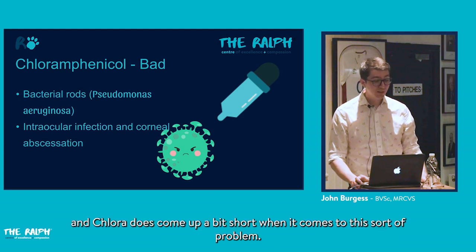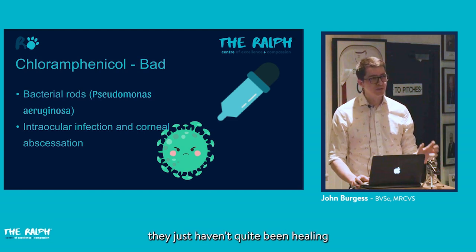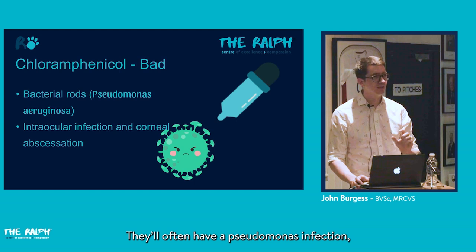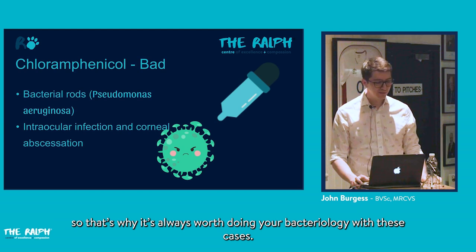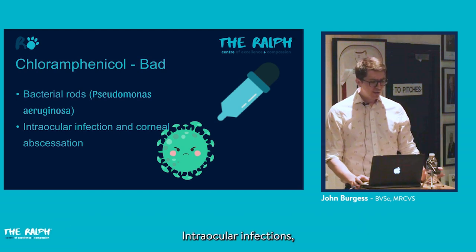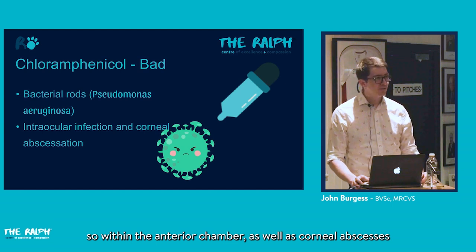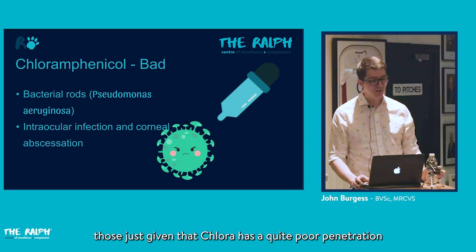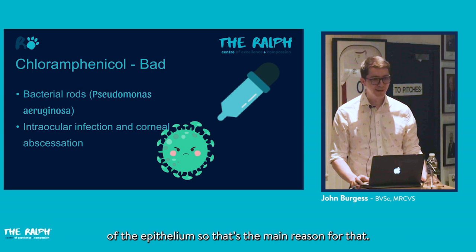Chloramphenicol doesn't work well for bacterial rods, specifically Pseudomonas. Studies show it falls short for this type of infection — cases referred that haven't been healing and are going the wrong way often have Pseudomonas and have been on chloramphenicol for a while. It also has poor penetration of the epithelium, making it less suitable for intraocular infections and re-epithelialized corneal abscesses.